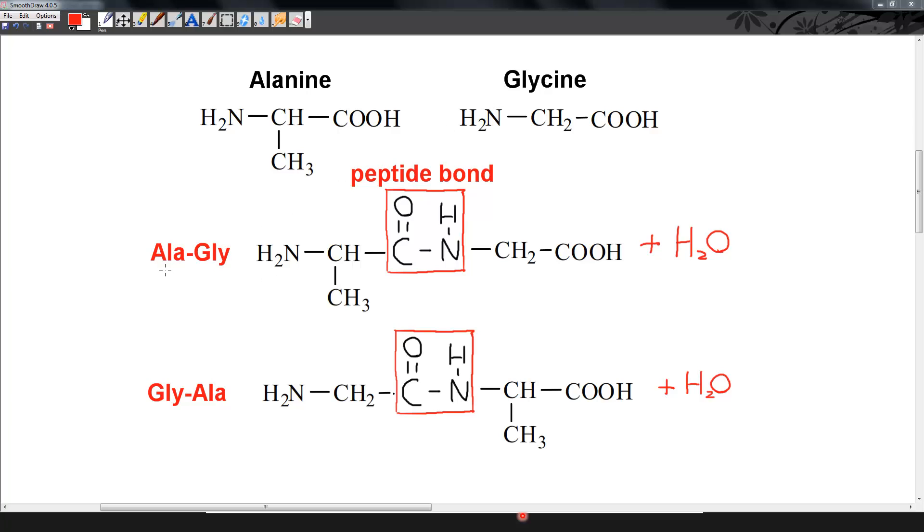At the top here, I've got the order as alanine and then glycine, so Ala-Gly. This is alanine. This is glycine. At the bottom, I've switched them around. So first I have glycine and then I have alanine, which is Gly-Ala. Here we have two different dipeptides that can be formed from two amino acids.